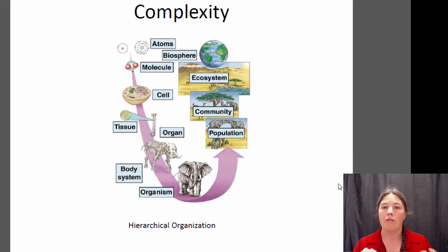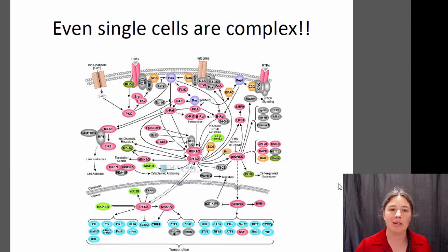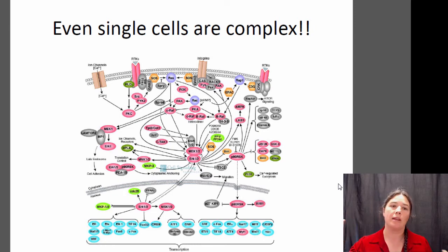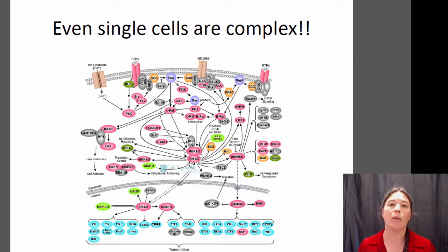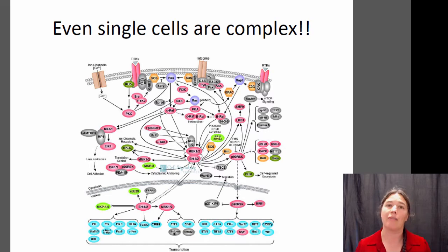At each level of organization there are traits that emerge that can't be predicted by lower levels — this is called emergent properties. You may be saying an elephant is complex, but some organisms are really simple, like a bacterium — a one-celled organism that seems pretty simple. But if you look at the cellular level there's a lot going on even in a single cell. This illustration here is a diagram of cell signaling, which is a way that a cell can react to its environment. It picks up signals from the outside via the cell membrane, and those signals are passed through a number of molecules within the cell to trigger expression of different genes.